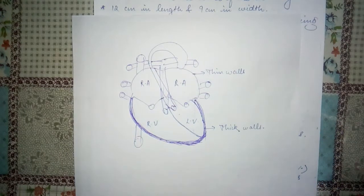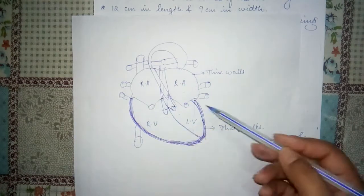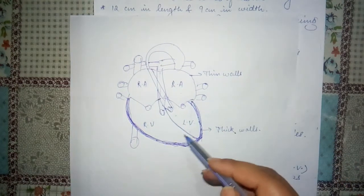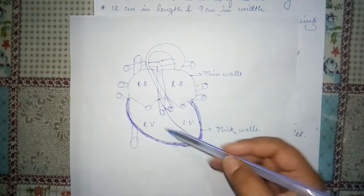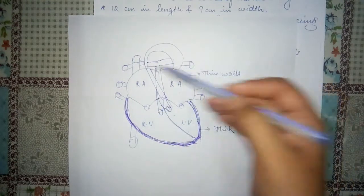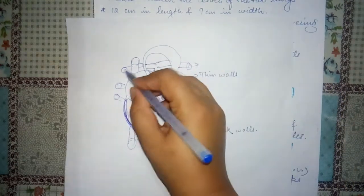Uske belkul opposite contradictory, ventricles ki wall mooti ish lihe hoot hi hain, because in ko joh blood hai, wo carry karke pahli chieze ho. Right ventricle ko blood ko carry karke lungs tak pahuchana hoota hai, right from here and here.